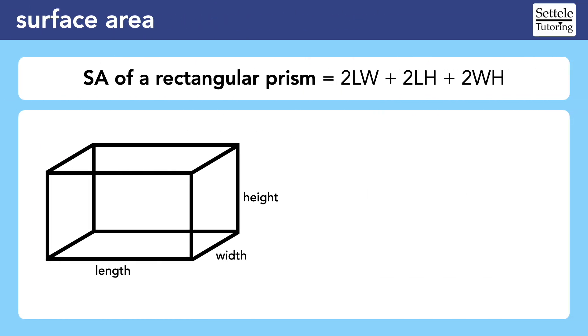A rectangular prism is similar, but you can already see that the formula is more complex because the length, width, and height are all going to be different distances. Some people want to memorize the formula at the top, but I find it just as easy to figure it out by adding up the faces.